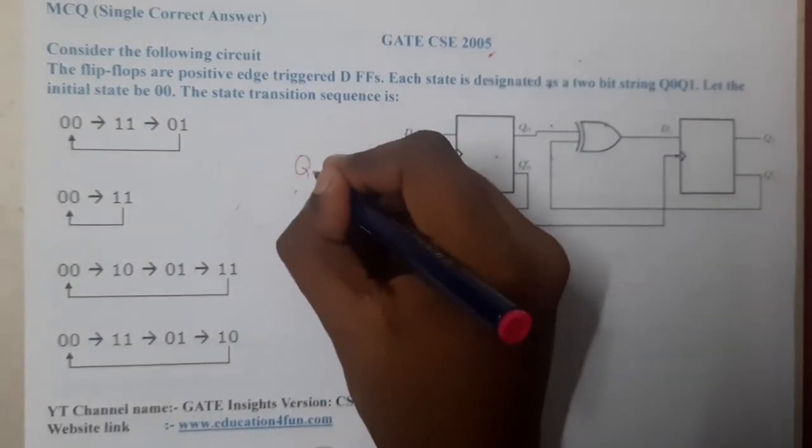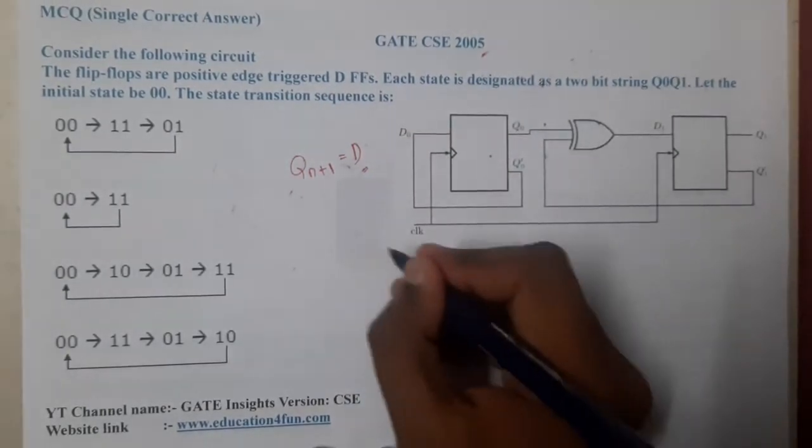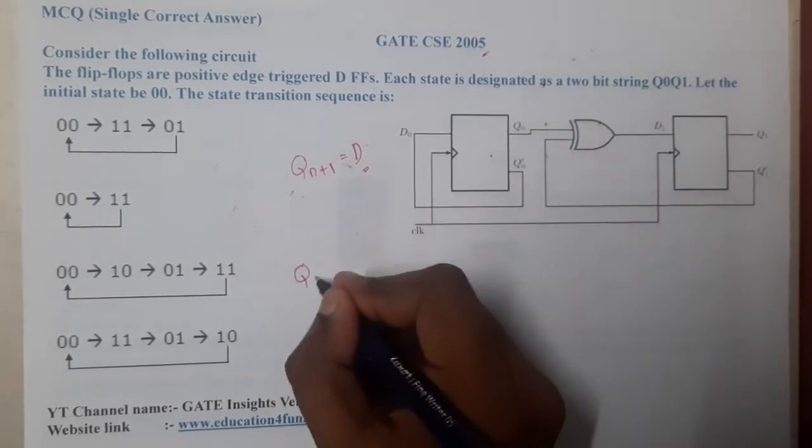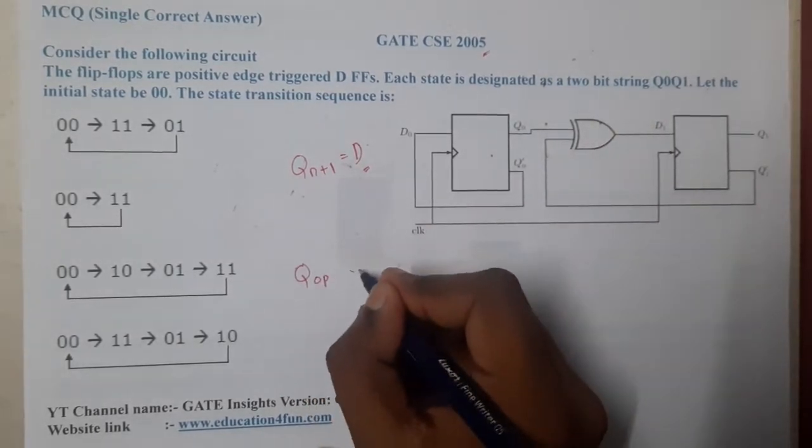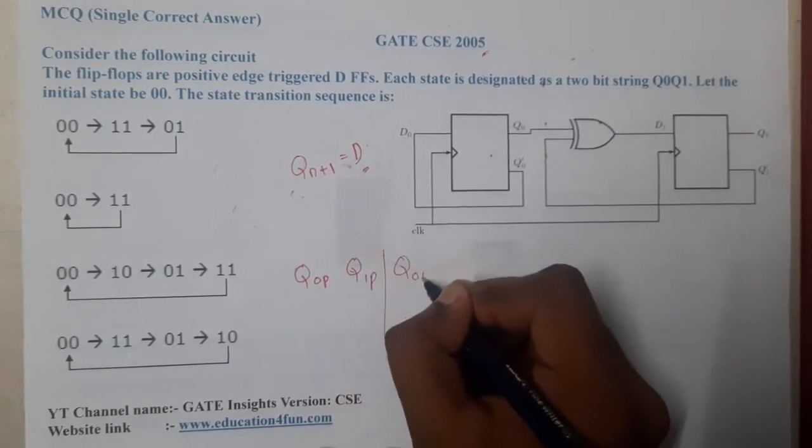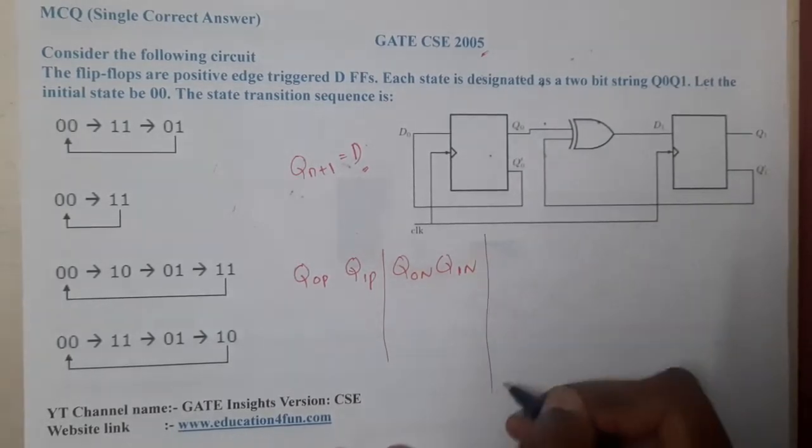They clearly gave which flip-flops, guys. These are D flip-flops, so the equation for D flip-flop is simply D. Let us start drawing the table, which will look like: they told Q0 is more precedent, so Q0 present and Q1 present, similarly Q0 next and Q1 next. This will be our table, so that is what we require to solve.